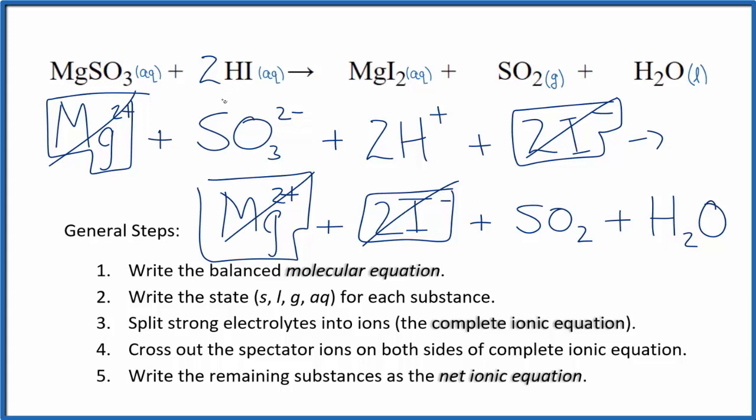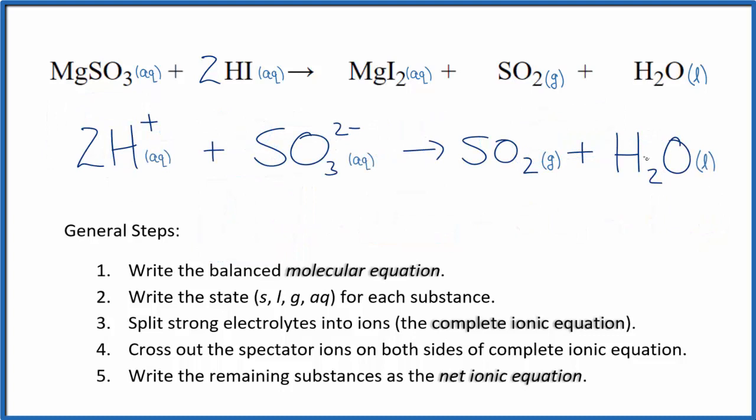I'll clean it up and write the states and we'll have our net ionic equation. This is our balanced net ionic equation. Charge is conserved: two plus, two times one plus and two minus add up to zero, net charge of zero, and in the products, net charge of zero.